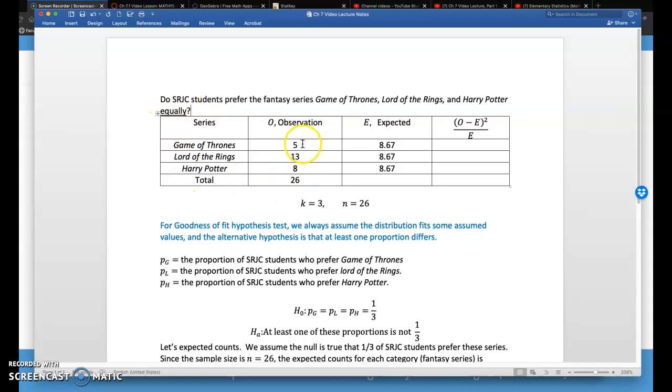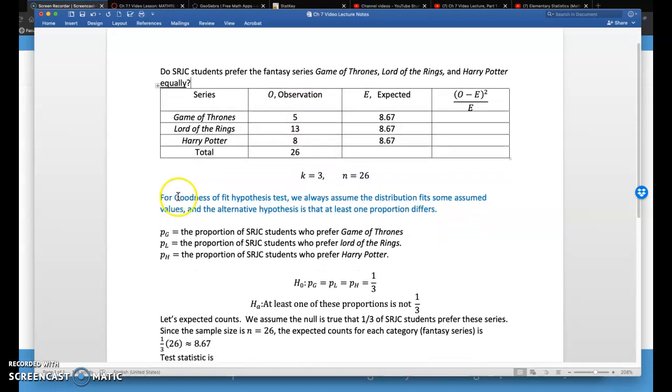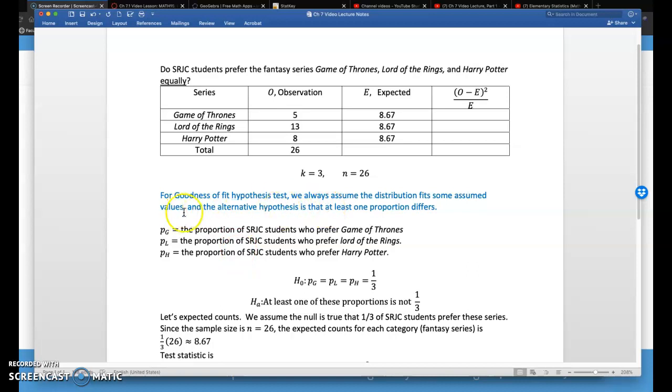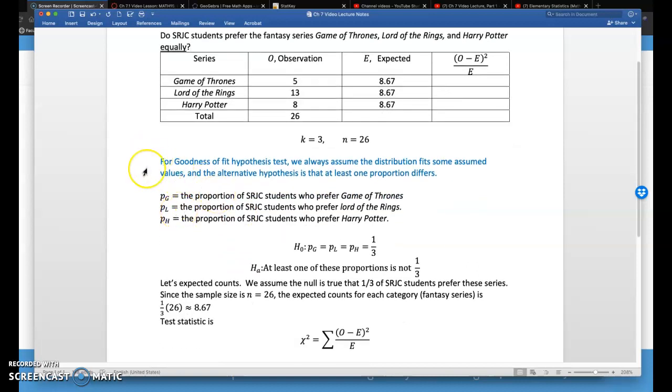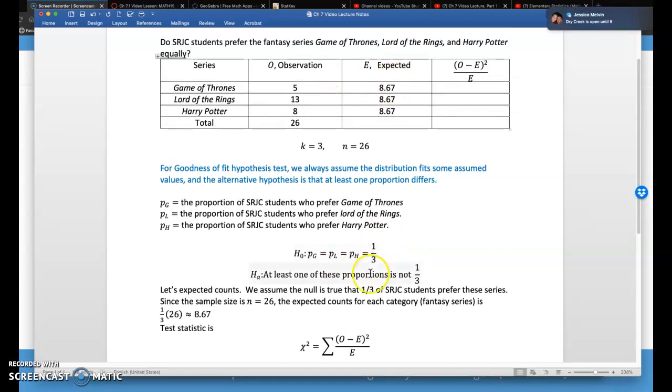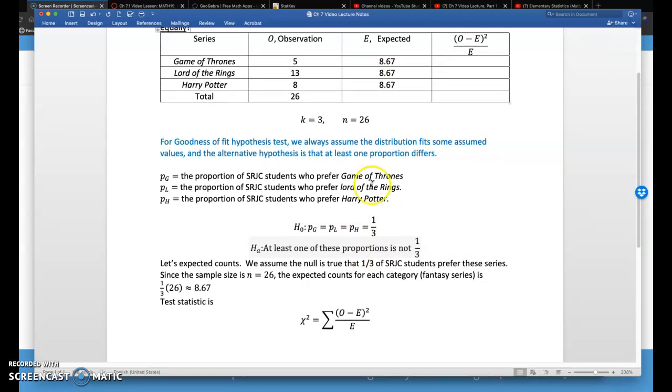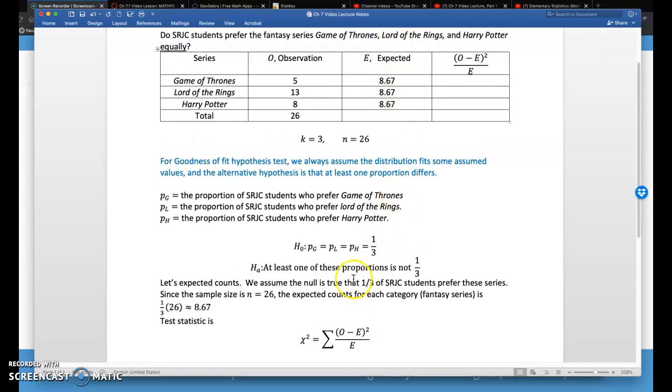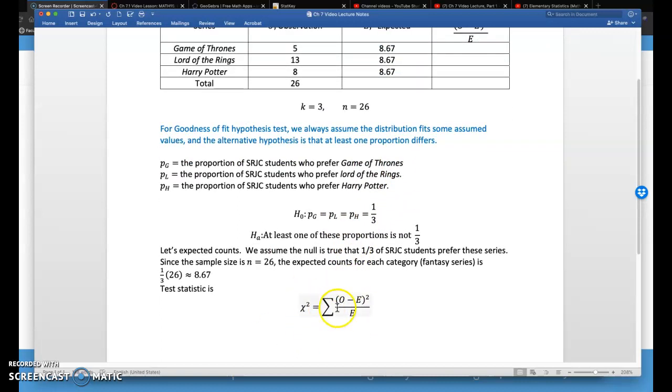As a class, you guys picked 5 for Game of Thrones, 13 for Lord of the Rings, and 8 for Harry Potter. So we have 3 categories and a sample size of 26. We're going to assume some distribution fits some observed values. In this case, we're assuming they're all equal—the 3 different fantasy series are equal at one third each. And we use that 26 times a third to get the expected counts. This is how we got our test statistic.